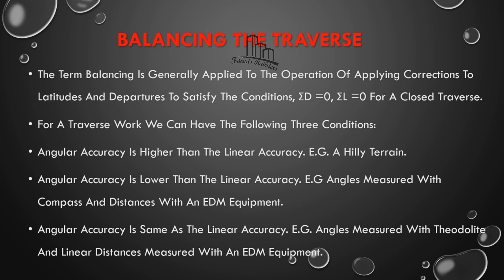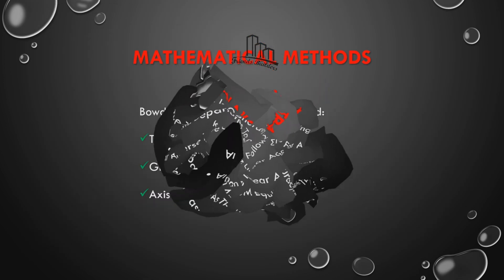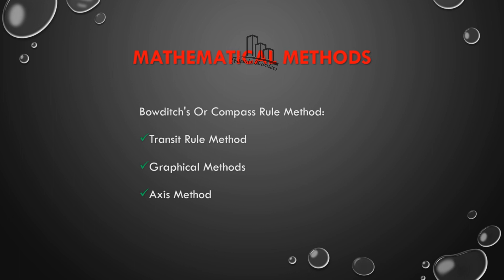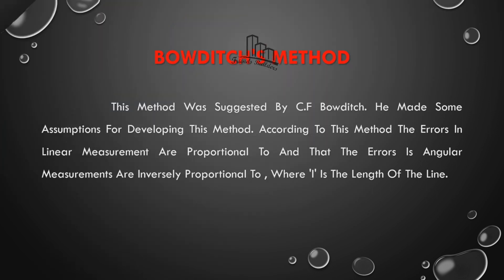When angular accuracy is lower than linear accuracy, the theodolite is used for angle and linear distance measurement — for example, the EDM method. The balance traverse uses mathematical methods: compass rule method, transit rule method, graphical method, axis method, least squares method, and assumption developing method.